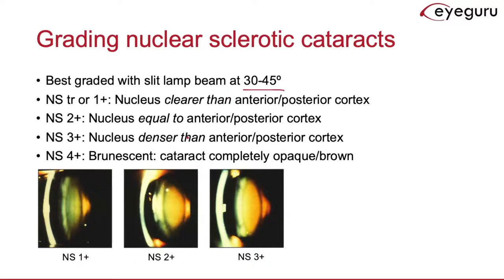In an early nuclear sclerotic cataract, the central nucleus is actually more clear than the anterior and posterior sections of the cortex. As the cataract progresses, the nucleus becomes increasingly more dense. For an NS2-plus cataract, the density of the nucleus is about equal to the anterior and posterior cortex. For an NS3-plus cataract, the nucleus is denser than the cortex. And when the nucleus becomes entirely opaque or brunescent, it is graded as NS4-plus.